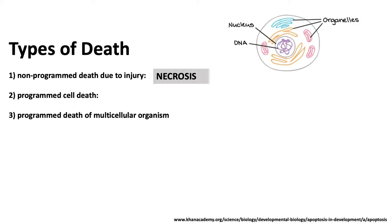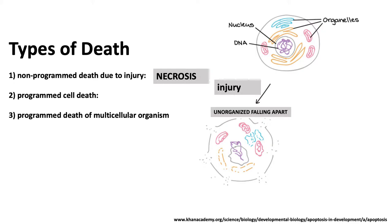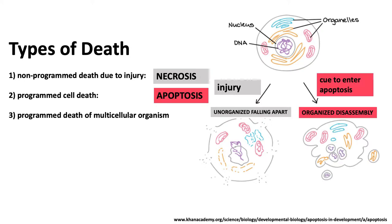Here's a diagram of a eukaryotic cell with organelles and a nucleus in the center with DNA. When there's an injury, the cell falls apart in a very disorganized way — that's necrosis. With apoptosis, some kind of cue is given to the cell: 'we don't want you here, you have to commit suicide.' The cell says okay, and there's an organized disassembly in which the pieces of the cell are then reused elsewhere in the body.